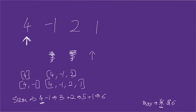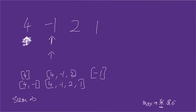Loop one now points to minus one and loop two resets to point to the same element as loop one. When we do this reset we also reset sum to zero. We add minus one, sum becomes minus one — max is larger so no update. We move loop two to two, add two, sum becomes one. Max is not updated. We move to one, add one, sum becomes two — still smaller than max.